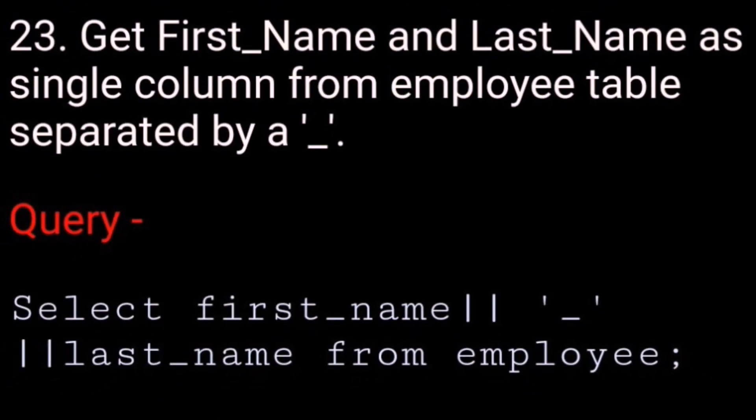Get first name and last name as a single column from the employee table, separated by an underscore. SELECT first_name || '_' || last_name FROM employee.